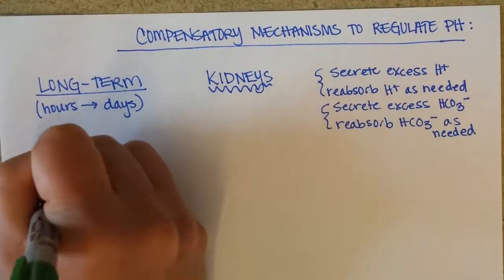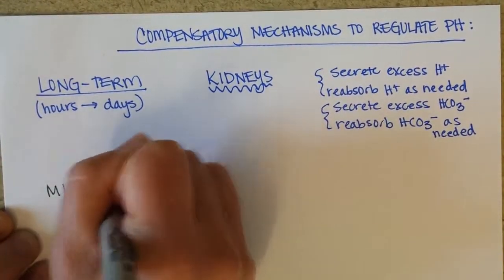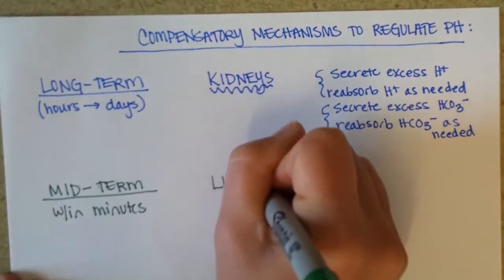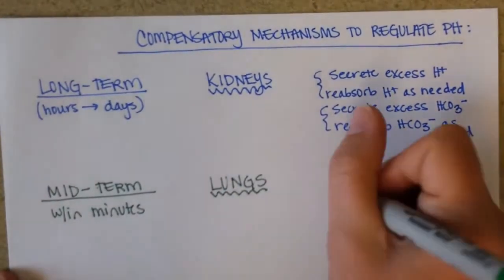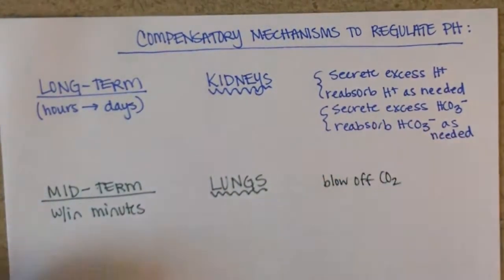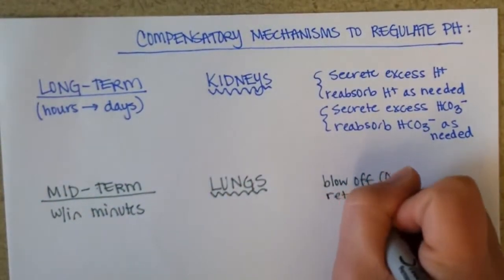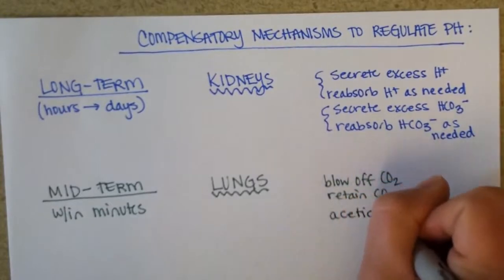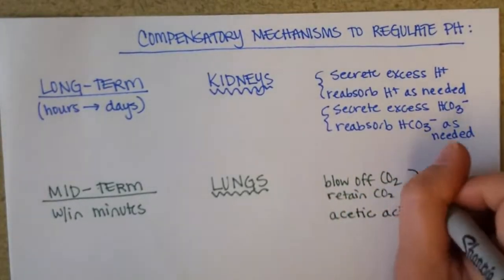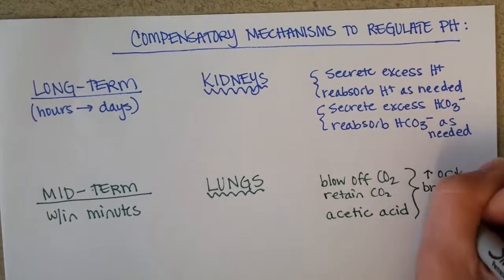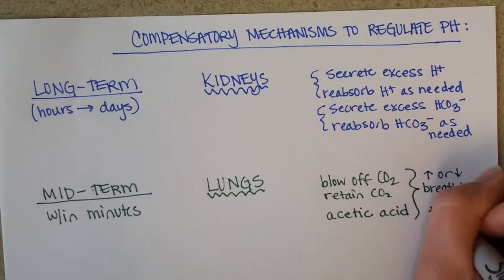Next, let's look at a mid-term compensatory mechanism of pH, which works within minutes. This is the lungs. The lungs are able to blow off CO2, as carbon dioxide makes the blood acidic, or they can retain CO2 as needed. The lungs can also get rid of some acetic acid by breathing out. These are regulated by breathing rate and depth.